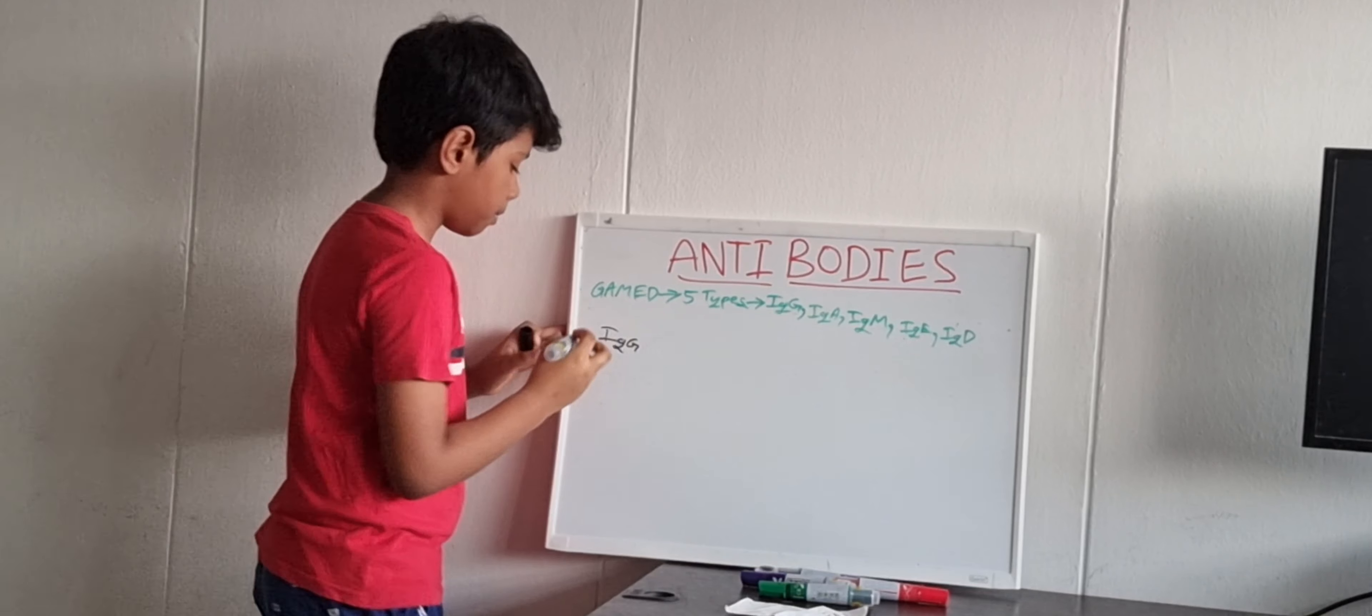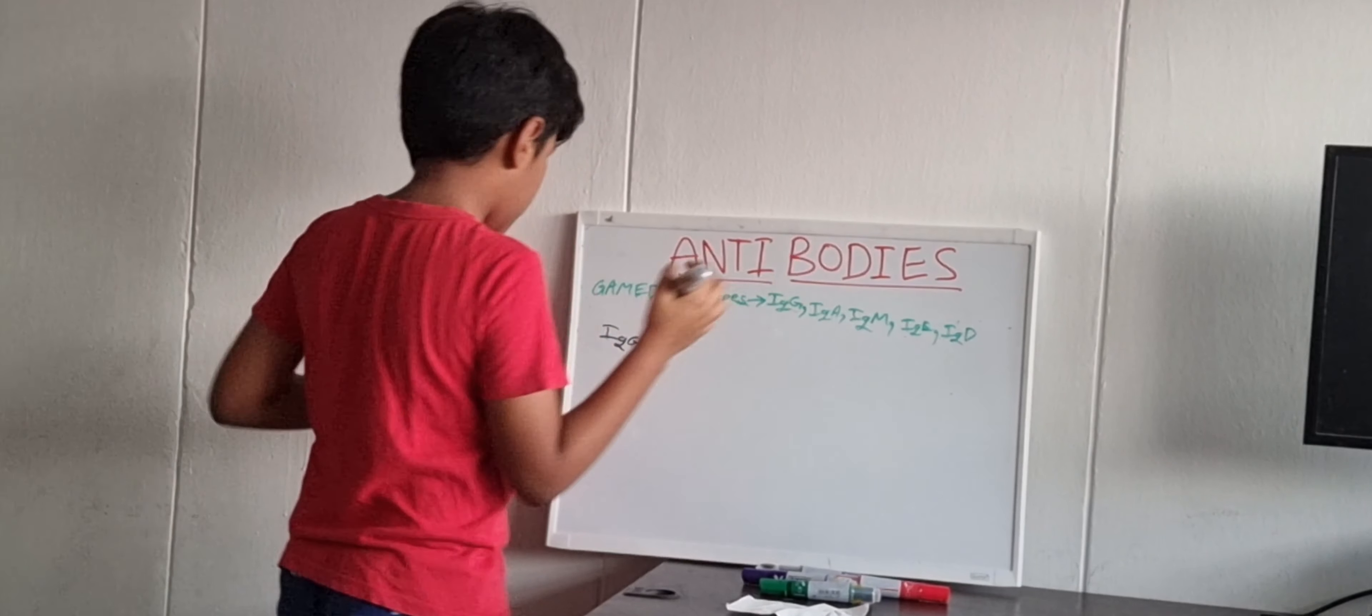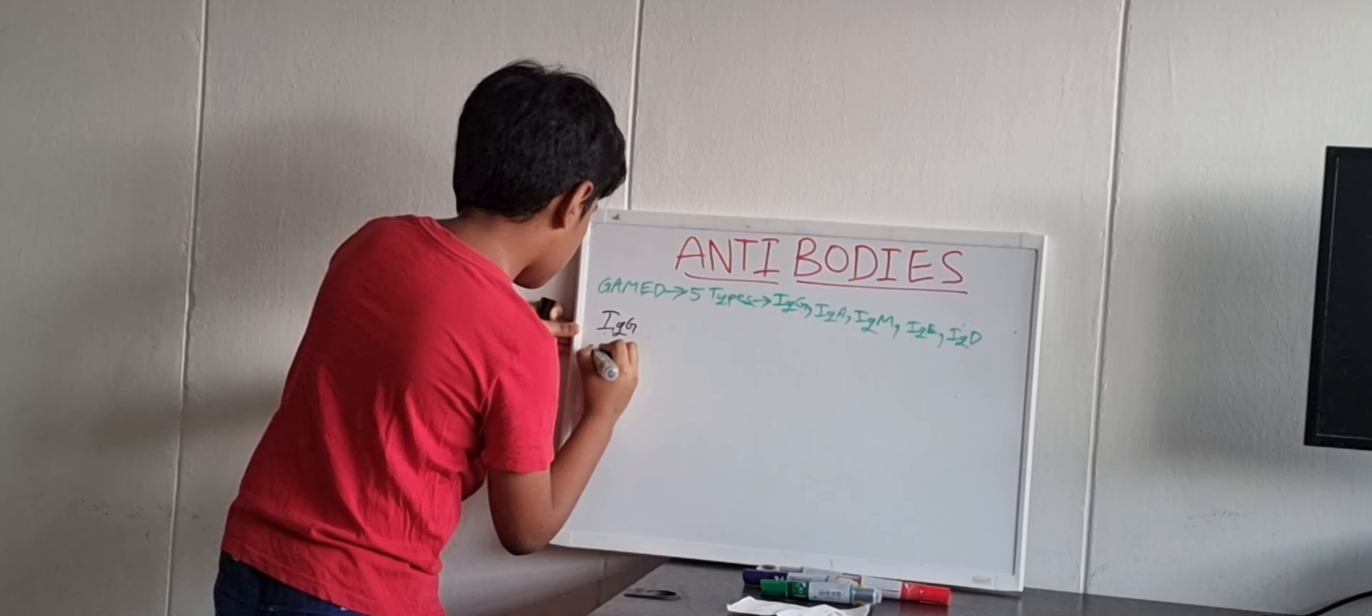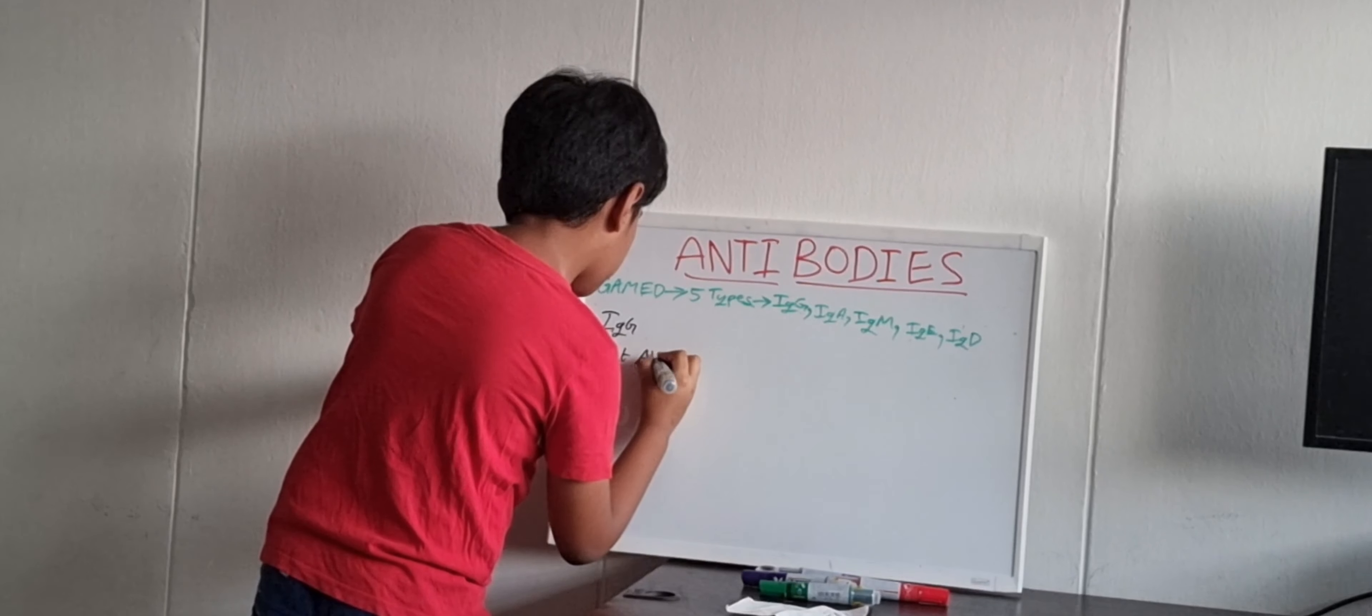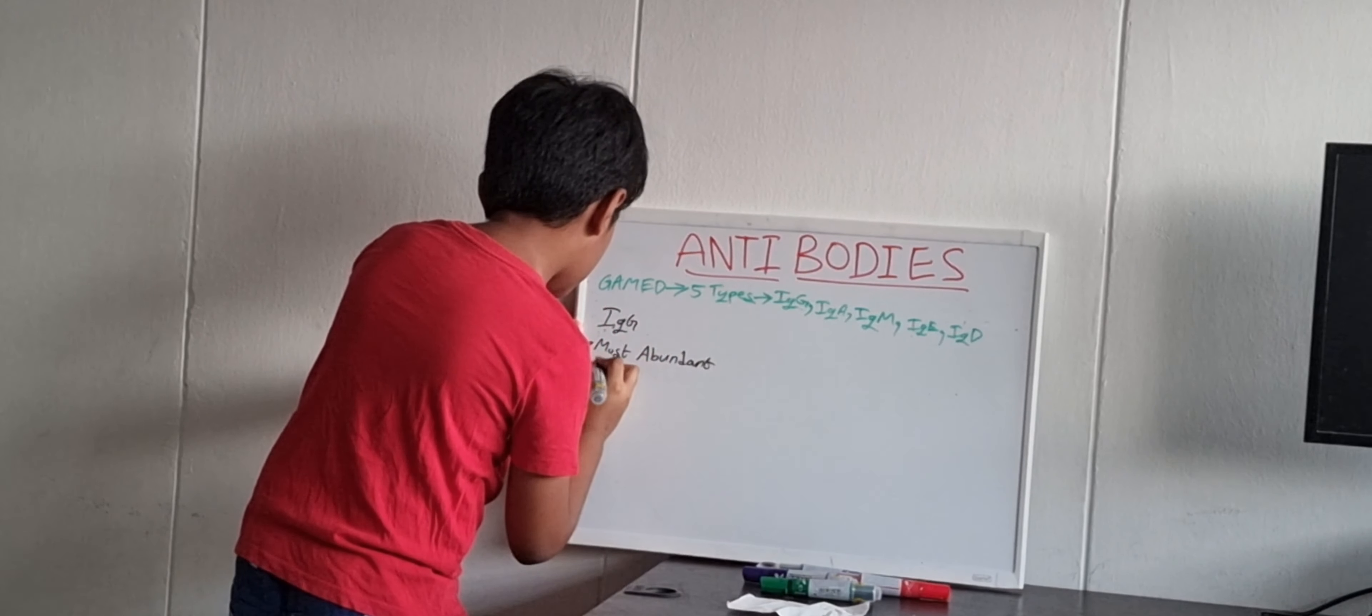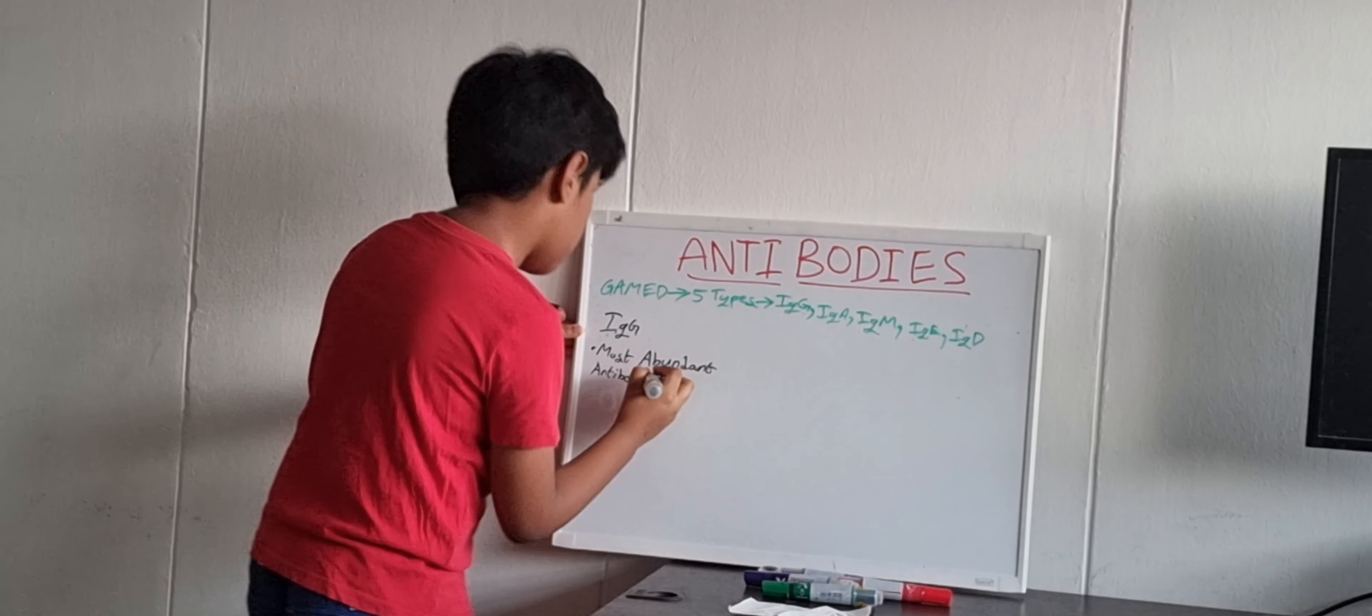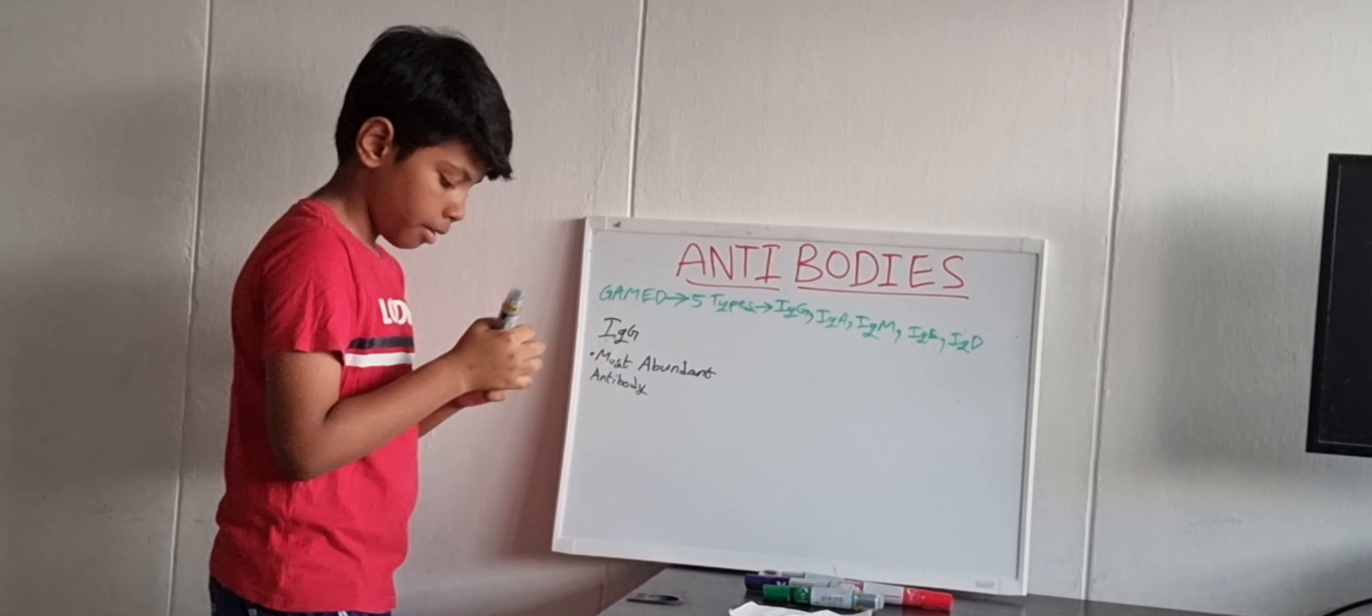IgG. So what is IgG? Well, IgG is the most abundant antibody. The most abundant antibody. Out of all of these, this is the most abundant antibody.